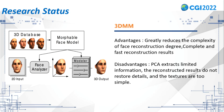3DMM is a generic 3D face model that represents faces with a fixed number of points. It greatly reduces the complexity of face reconstruction, and the face can be quickly reconstructed with good results in most cases. However, because the 3DMM model parameter space is a relatively low-dimensional parameter space and the texture model is too simple, PCA can only extract limited 3D information, so the reconstructed results are too average and lack detail.